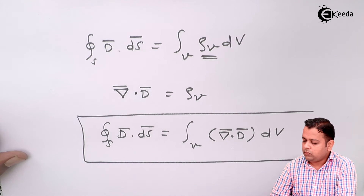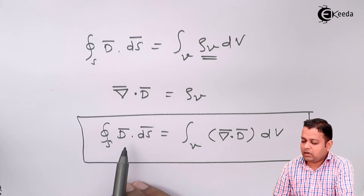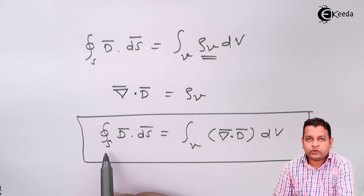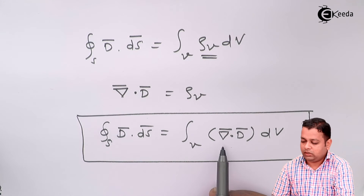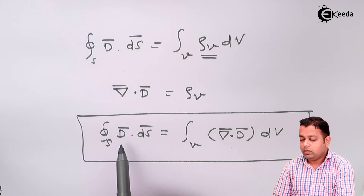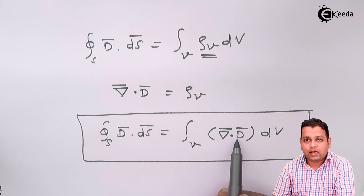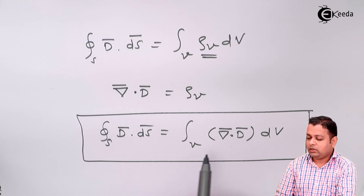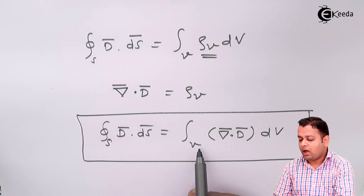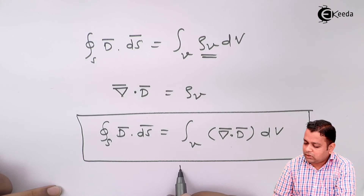Using the substitution for rho_v, we arrived at this form of equation. Focusing on the left-hand and right-hand sides, the left-hand side has a closed surface integral involving two dimensions, while the right-hand side has a volume integral involving three dimensions. The vector operand is the same D-bar on both sides. When the same vector is represented using both a closed surface integral and a volume integral with divergence, this relationship is called the Divergence Theorem.